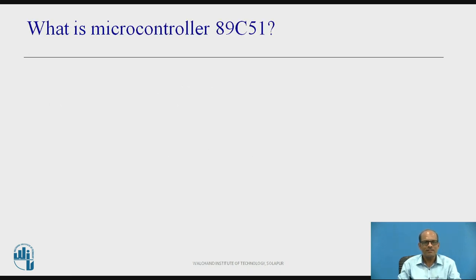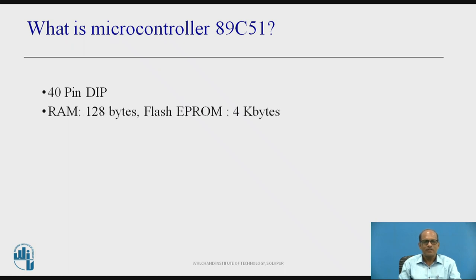First, let us understand what is Microcontroller 89C51. It is an 8-bit microcontroller available in 40-pin DIP and other packages. The memory available with 89C51 includes 128 bytes of RAM for temporary storage of variables during programming, and 4 KB of Flash EPROM for storing the program code.